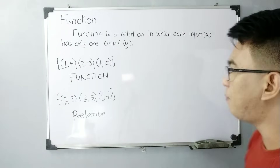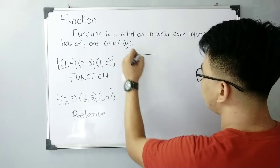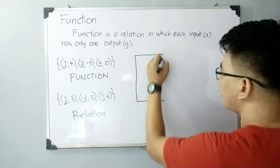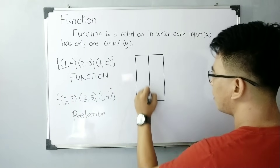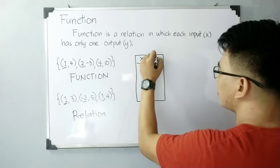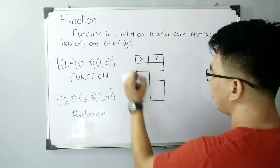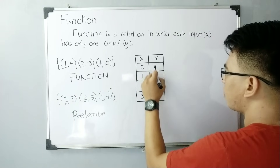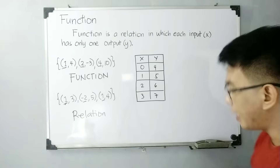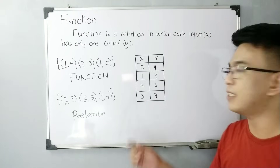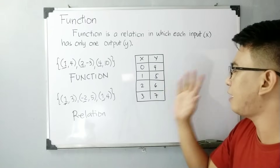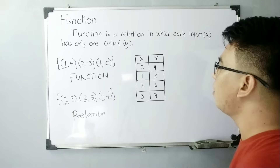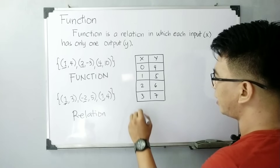How about in a table of values? For example, the x values are 0, 1, 2, 3 and the y values are 4, 5, 6, 7. As you can see, focusing on the x values: 0, 1, 2, 3 — this table of values is an example of a function because there are no repeating x values. So this one is a function.